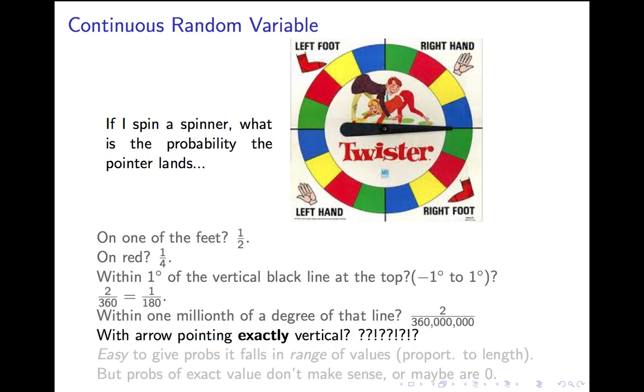What's the probability the arrow will point exactly on the vertical? Well, it's got to be less than one out of 180. It's got to be less than one out of 180 million. But it's also got to be less than one out of 180 billion, right? It's a probability it's within a billionth of a degree. It has to be zero.